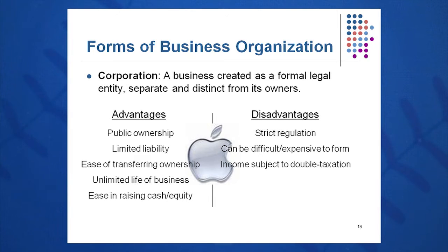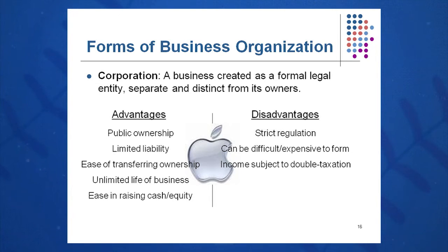The third type of business organization is a corporation — a business separate and distinct, really a legal person separate and distinct from its owners. A corporation can borrow money, buy property, sue and be sued, and own stock in other corporations. Key advantages include public ownership through selling stock, limited liability protecting shareholders' personal assets, easy transfer of ownership through selling shares, and unlimited life of the business. Disadvantages include strict regulation and the fact that it can sometimes be expensive to form, though I was fortunate to form mine for just a few hundred dollars about ten years ago.